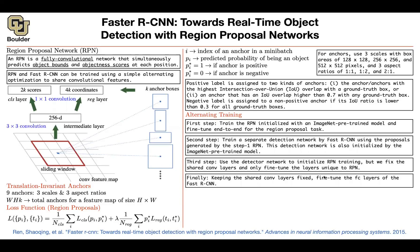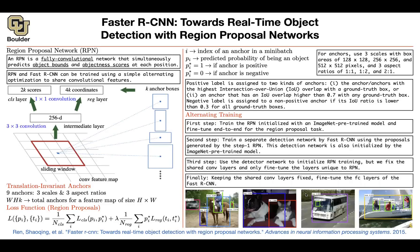Here are some qualitative examples of detection — persons, boats, a person on a bus, cats, dogs, etc. Now everything is deep learning: there's no reason to use support vector machines and no reason to use selective search anymore.